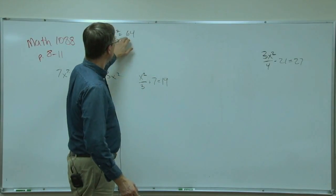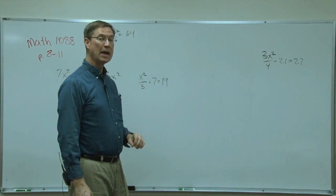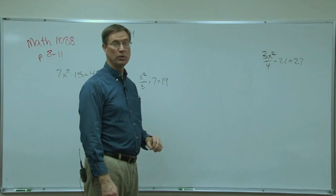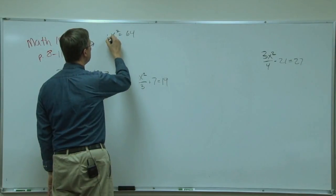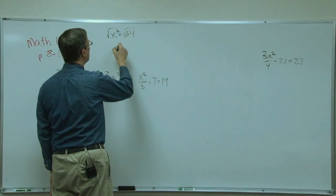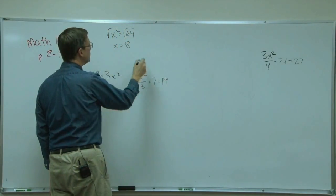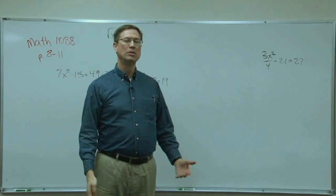So x squared equals 64. What would x be? It's not 32. It's not half. It's what number times itself would equal 64? And of course, the answer is 8. So those are easy.